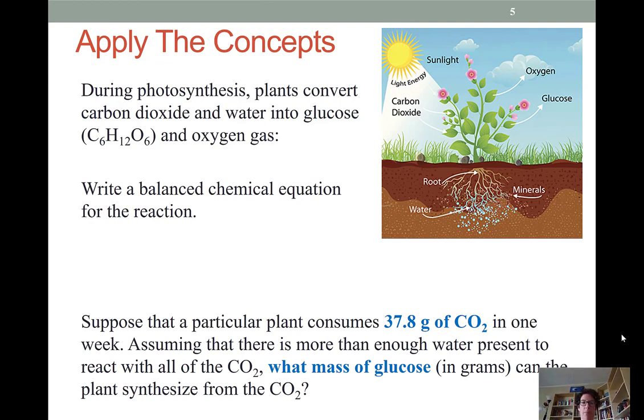As I mentioned, we need to start by balancing out this chemical equation. We'll take our words and turn them into reactants and products. Plants convert carbon dioxide, so carbon dioxide is a reactant, and water is also a reactant, into the products being this glucose and oxygen gas. We're recalling that oxygen is a diatomic element, so we've got O2 as our gas.